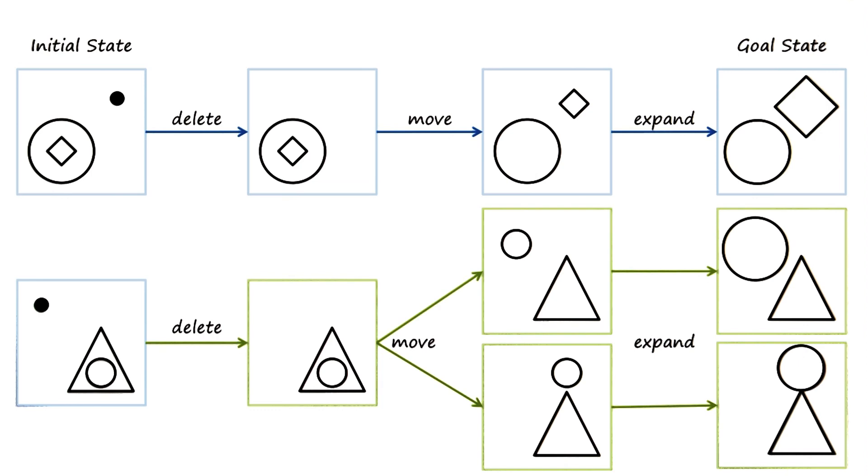Often, solving a complex problem requires a combination of AI techniques. At one point, one might use problem reduction. At another point, one might use generate and test. At a third point, one might use mean sense analysis.